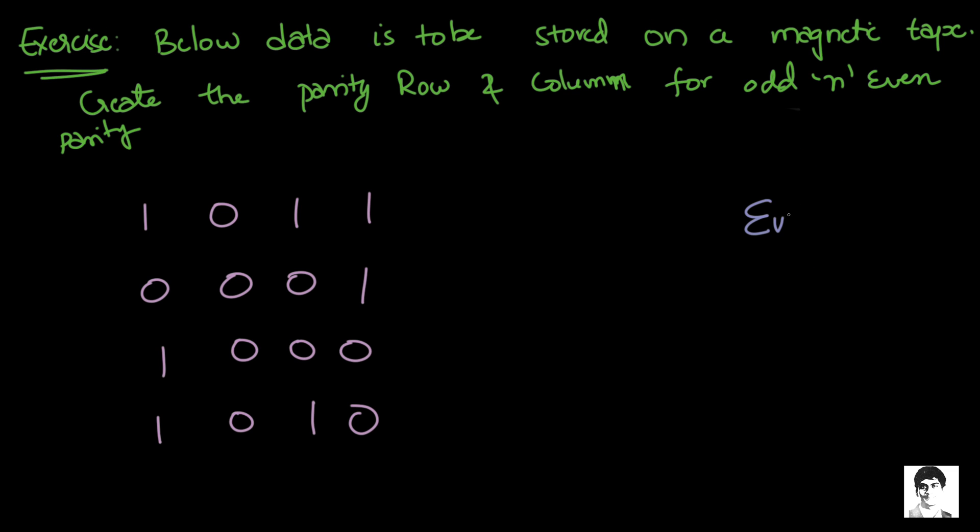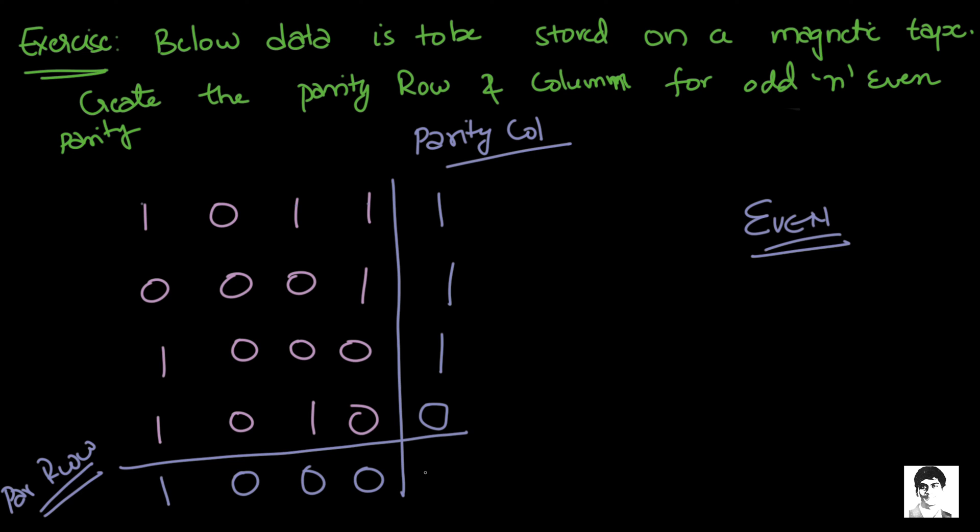Now let us build the parity block for even parity. We have the parity column and the parity row. In the first row, there are three ones and since we want an even number of ones, we will give this a one. Second row, even ones, one, one, we already have two, so this will be a zero. Coming to the columns, we'll give it a one, we'll give this a zero, we'll give this one a zero, because already two ones, already two ones. So there we go. This is how we build the parity block for an even parity.